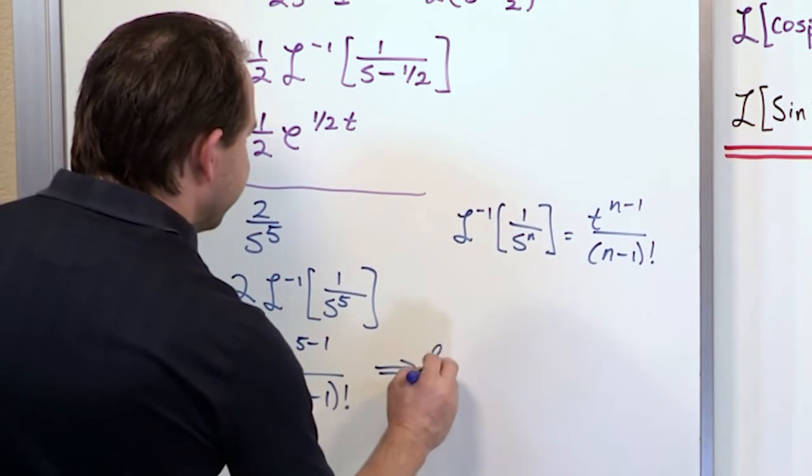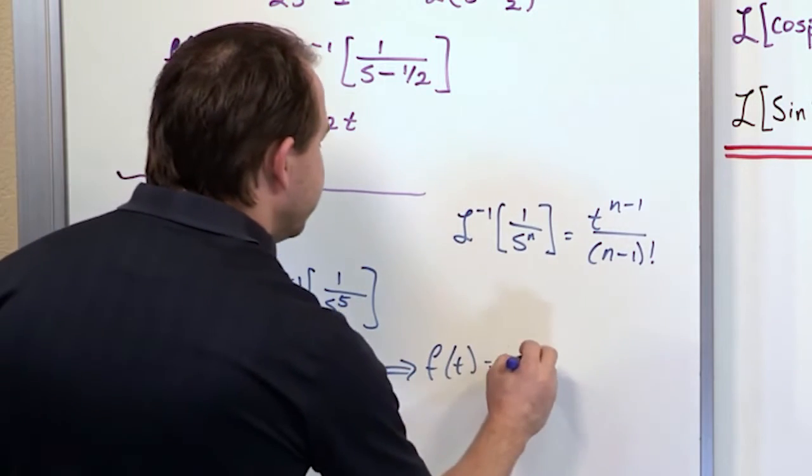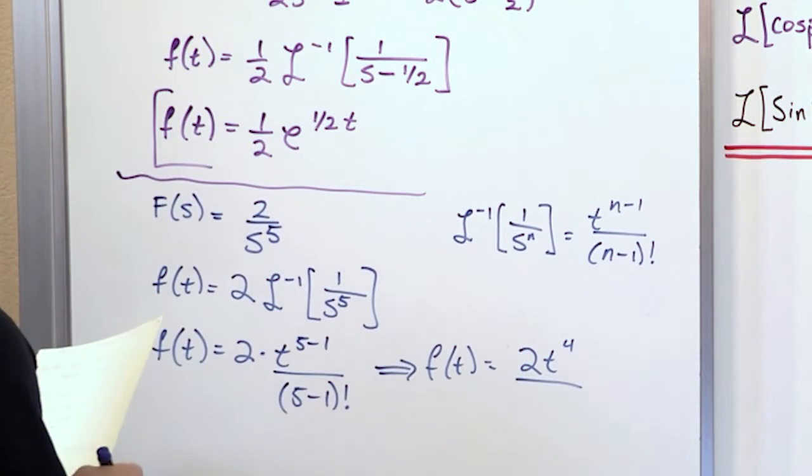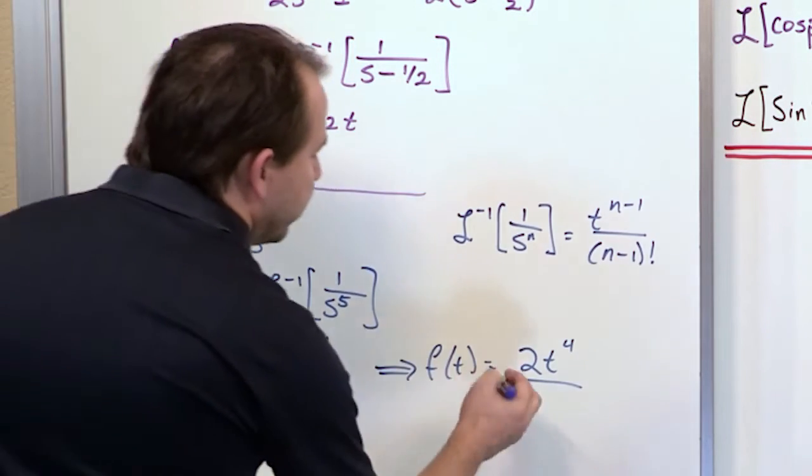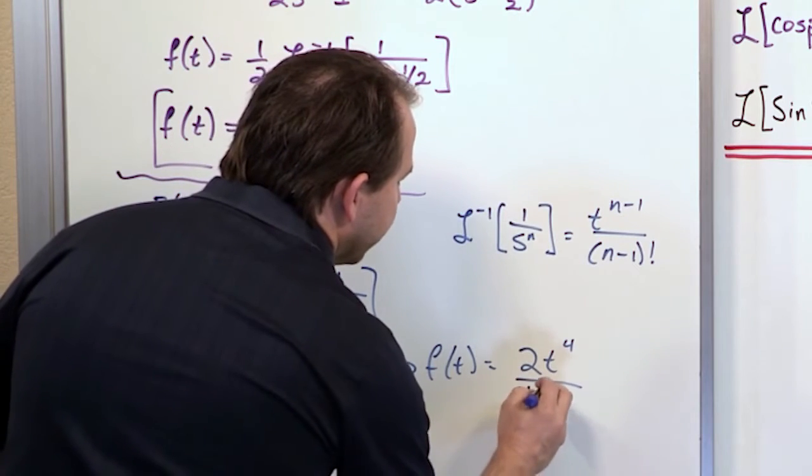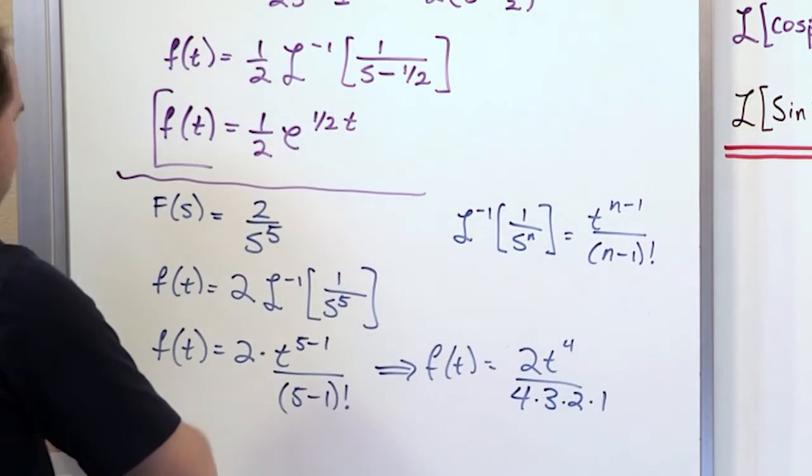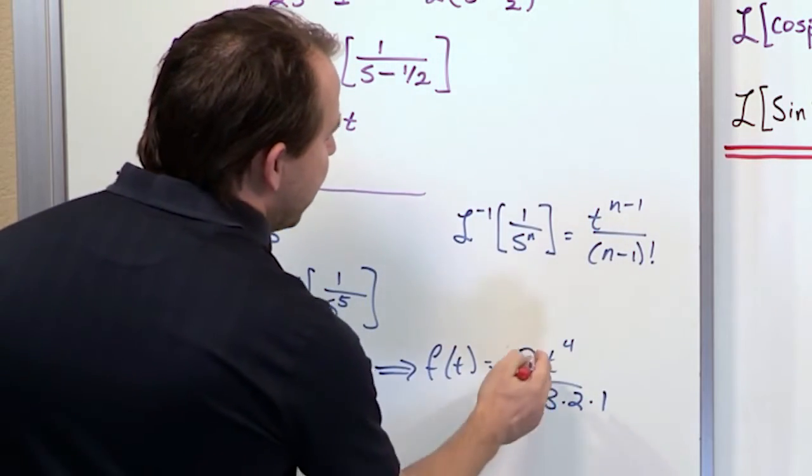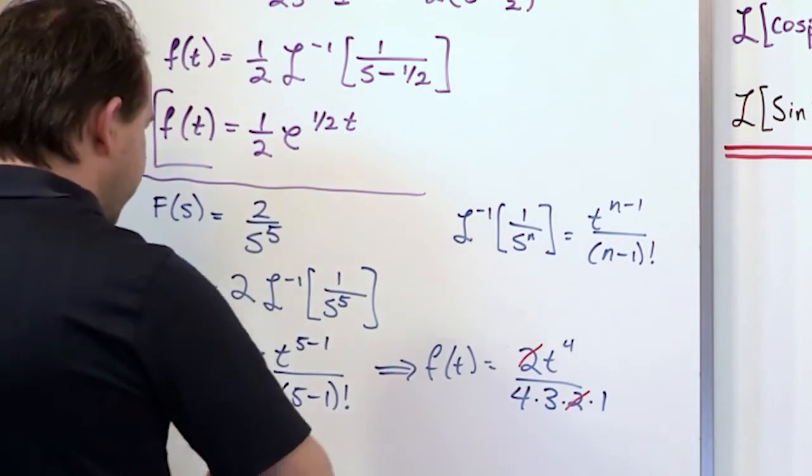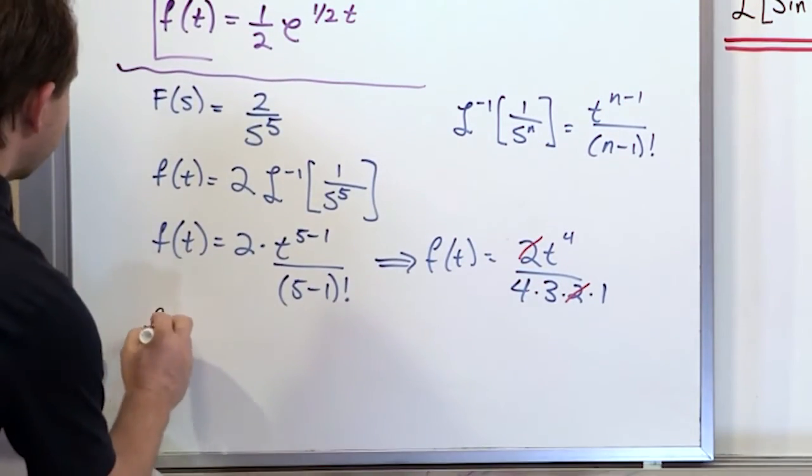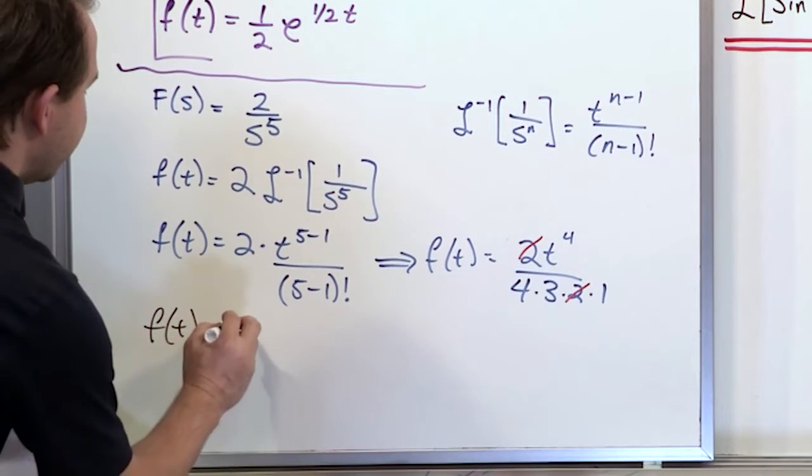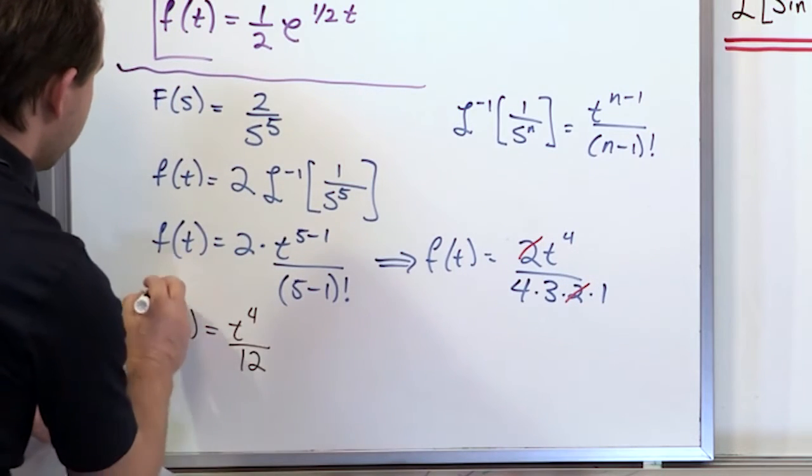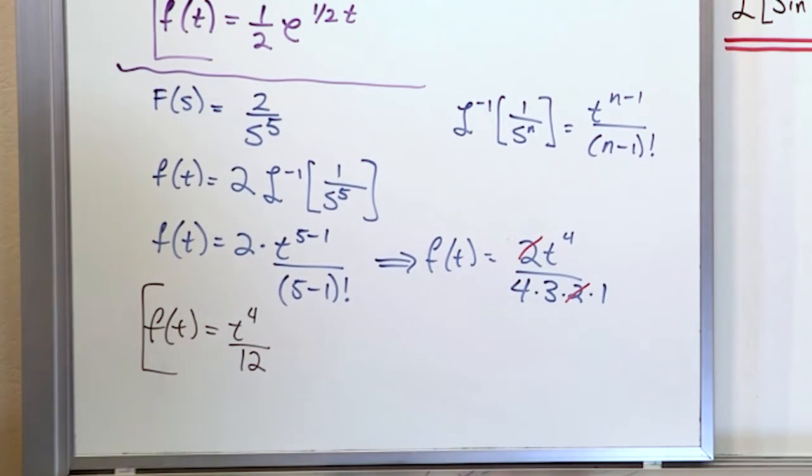So then you can just write a conclusion statement. F of t is 2 times t to the fourth power. And then you have to evaluate this. 4 factorial is 4 times 3 times 2 times 1. So the way you can write that is 4 times 3 times 2 times 1. And I'm writing it out for you just to kind of remind you I don't have to calculate it really because the 2 on the top can cancel with the 2 on the bottom right here. And so at the end of the day you can say f of t is t to the fourth power. Where on the bottom you know 4 times 3 is 12 times 1 is again still 12. So this is the function of time. t to the fourth power over 12.